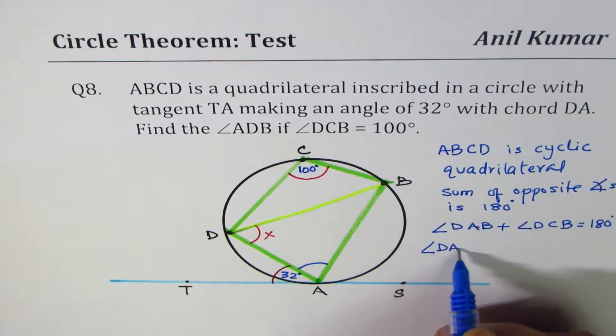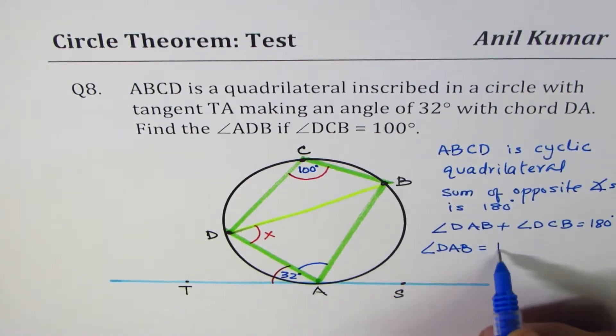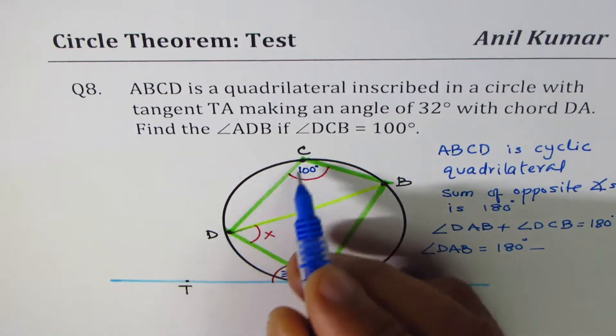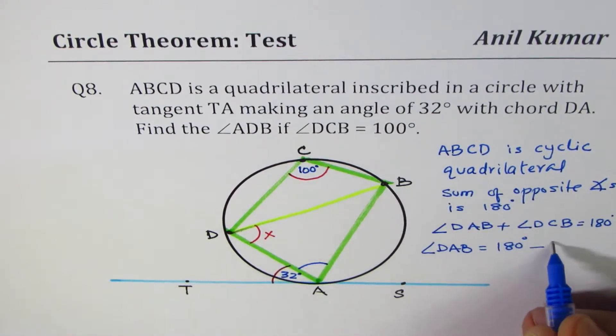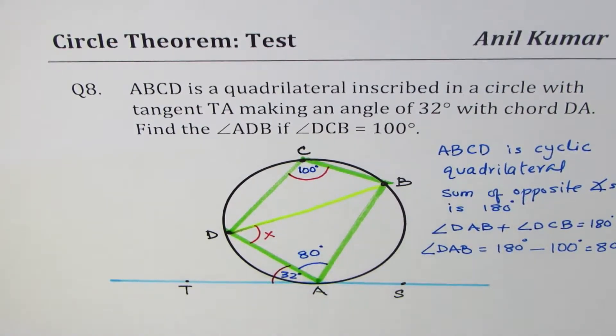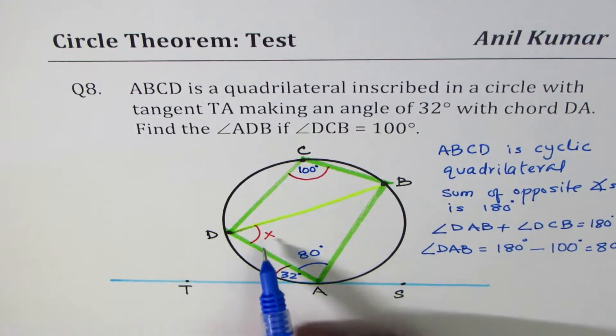So the angle DAB equals 180 degrees take away angle DCB, which is given to us as 100. And that is 80 degrees. So we know this angle is 80 degrees. So we got one angle. But we need to find what X is. How do we do that?